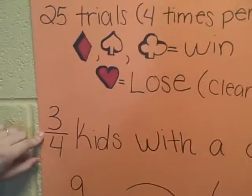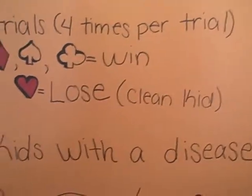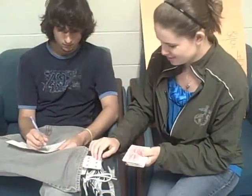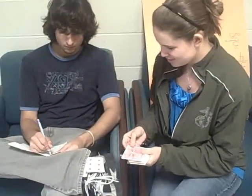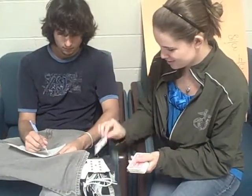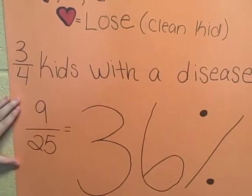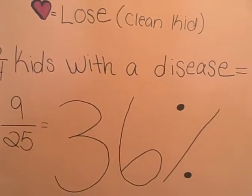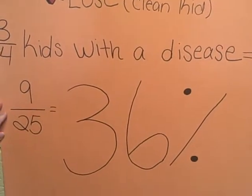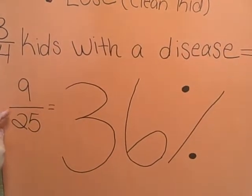Three-fourths of the kids with a disease equals 9 out of 25, which also equals 36%.